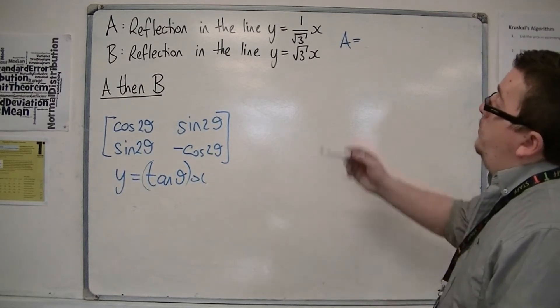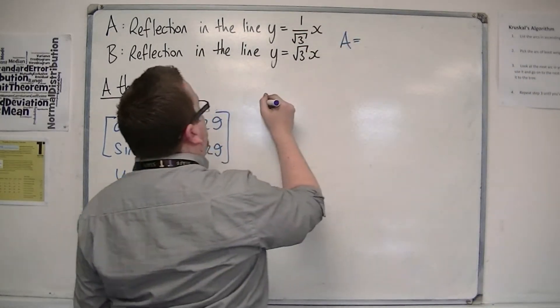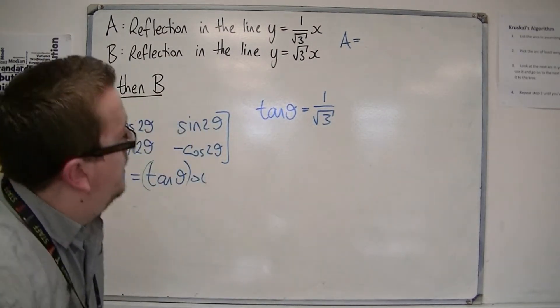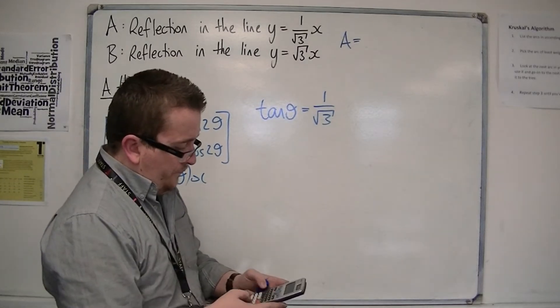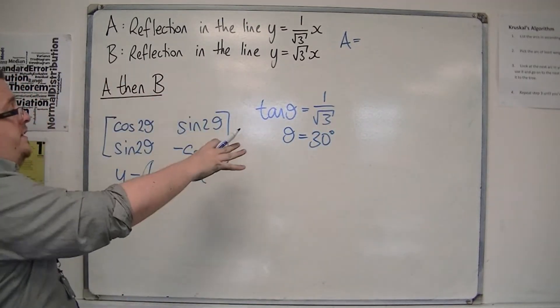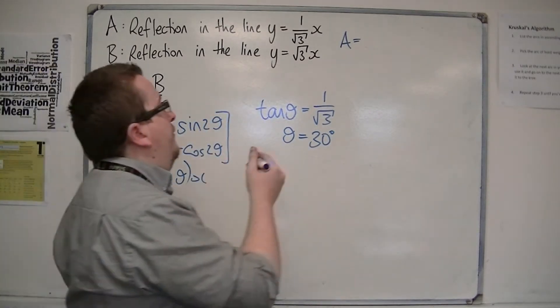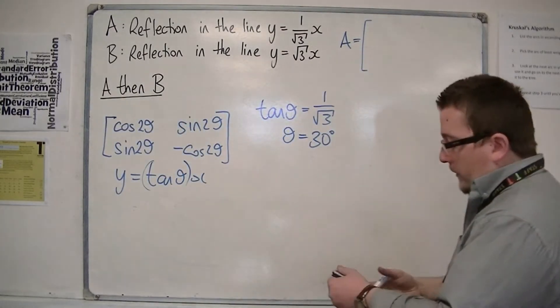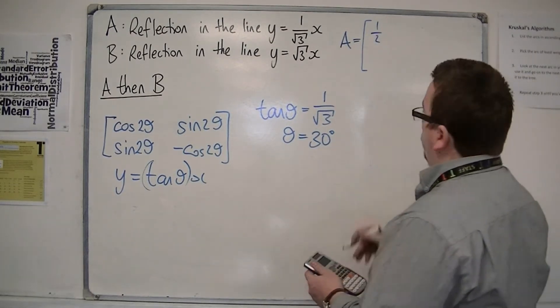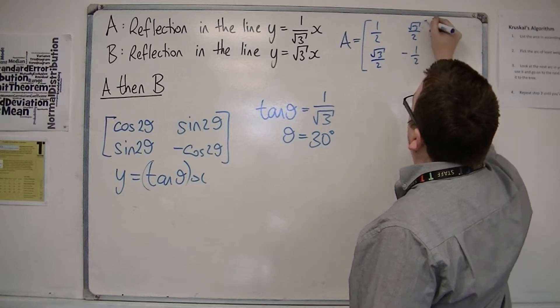What we want to do is we want to work out what that theta is. Because what we have here for A is that tan theta must be equal to the 1 over root 3. We can inverse tan 1 over root 3, which is 30 degrees. That means with theta being 30 degrees, we can substitute that into the matrix itself. We have cos of 60, which is 1 half. We've got sin of 60, which is root 3 over 2. So we've got root 3 over 2 there and minus 1 half there. That is matrix A.